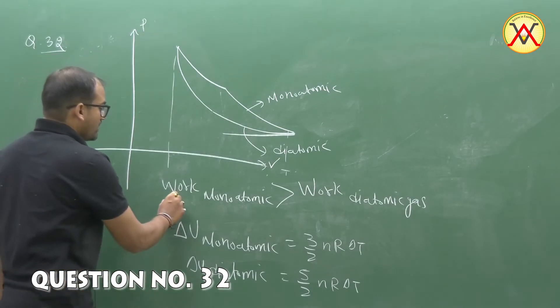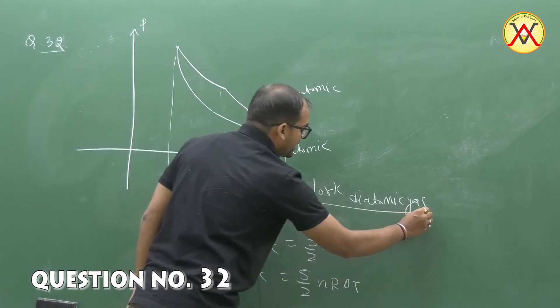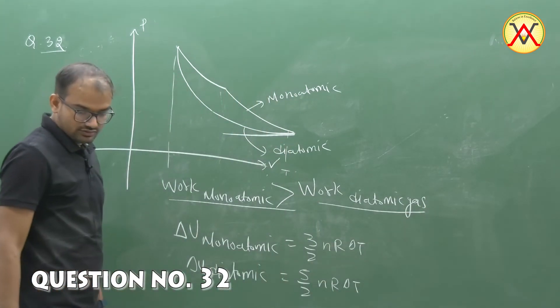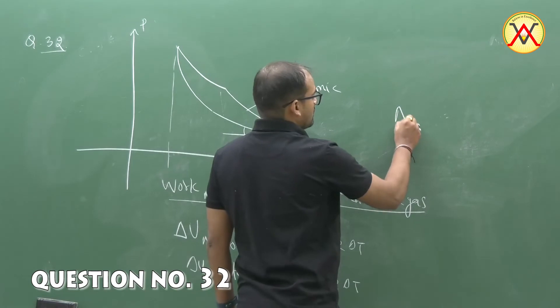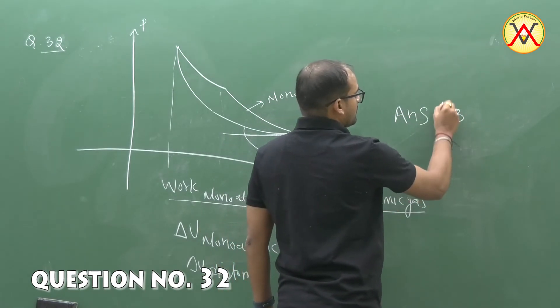So we can say that work done of monatomic is more than diatomic gas. The answer should be B.